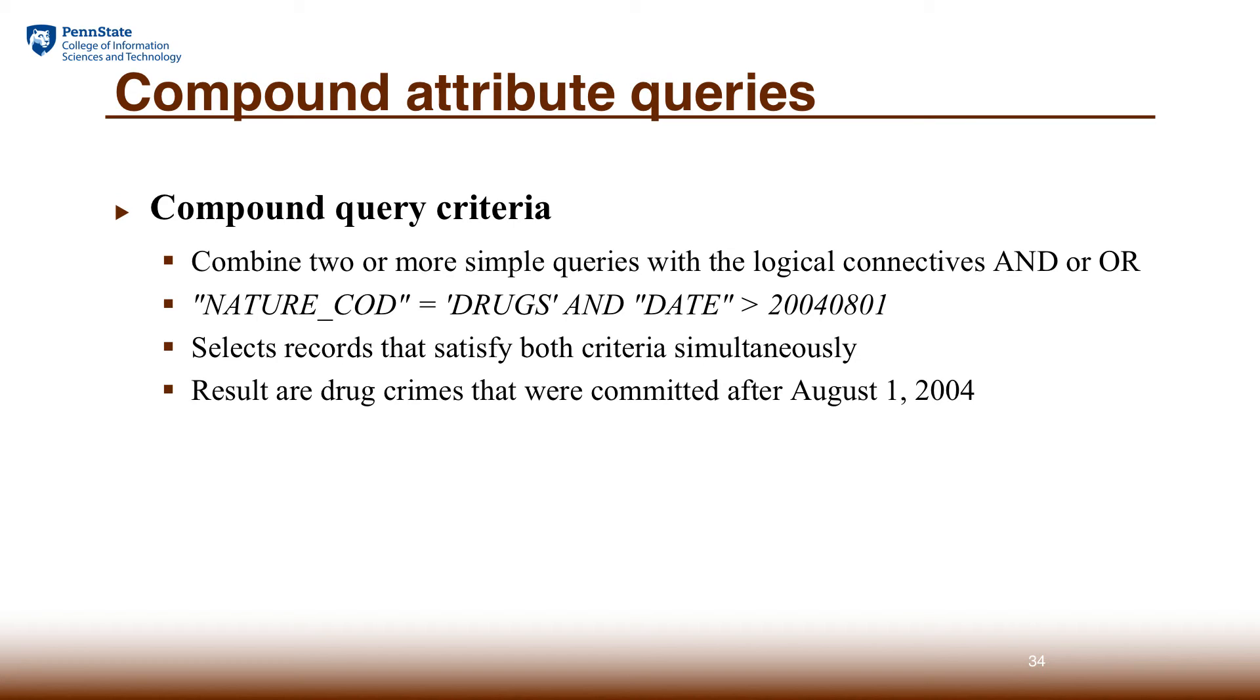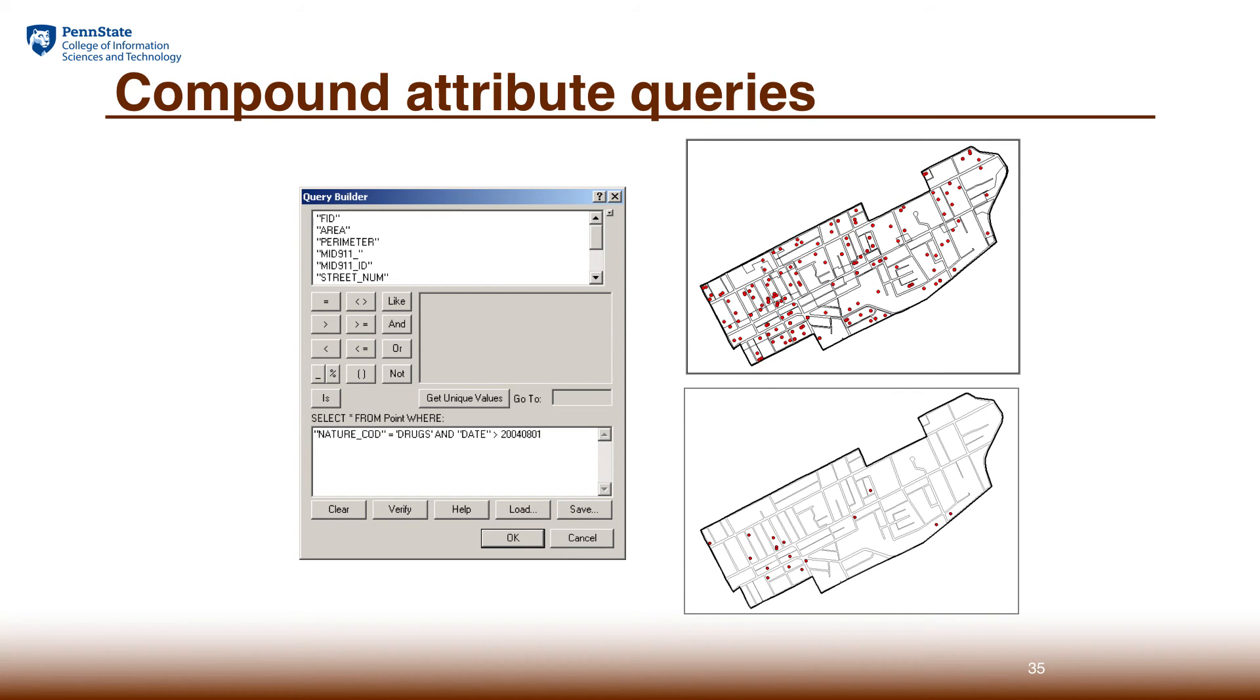Here we show a result of the definition query on crime data, where the selected crime has to meet those two conditions. One is type of drug crime, and the crime has to happen after year 2004, August the first. So in this case, we have fewer crimes because it has to meet both conditions.